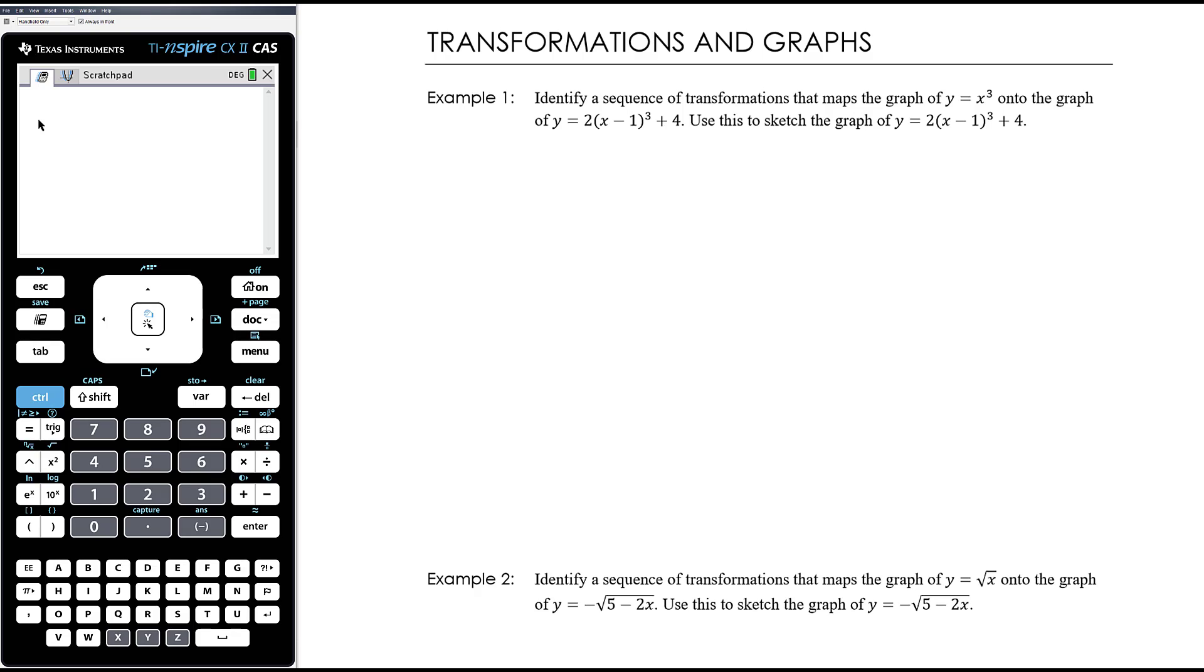We want to identify a sequence of transformations that maps the graph of y equals x cubed onto the graph of y equals 2 times (x minus 1) cubed plus 4 and use this to sketch the graph. This is a really simple sequence of transformations because this is in turning point form. The 2 out the front is dilation by factor 2 from the x-axis, the 1 in the bracket is a translation to the right by 1, and the plus 4 is a translation up by 4.